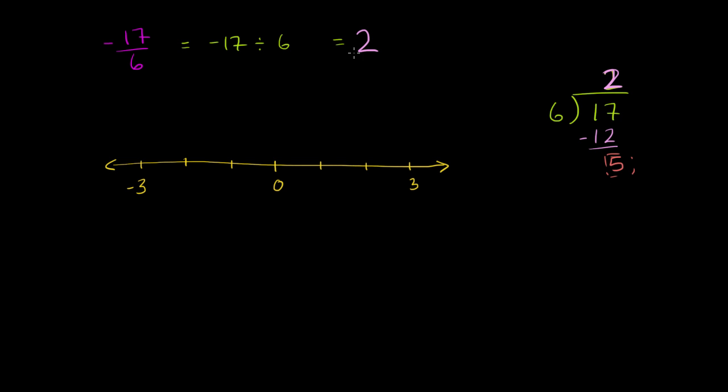So negative 17 divided by 6, this is going to be negative 2. A negative divided by a positive is a negative. Negative 2 and then a remainder of 5. So it's negative 2 and 5/6. So all I've done is I've converted this improper fraction into a mixed number.